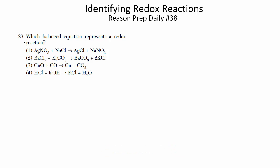This question doesn't come from an SAT Subject Test in chemistry — it comes from a different test. As you can see, it only has four choices instead of five. But you will see a question like this on the test, so it is appropriate. What we need to do is find out which reaction represents a redox reaction.